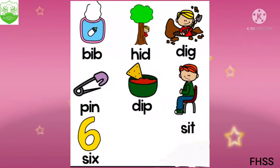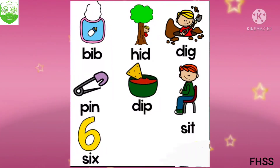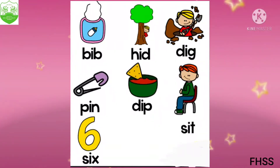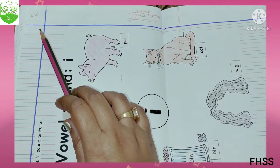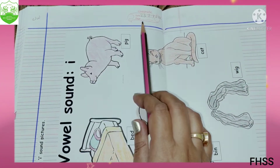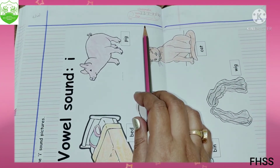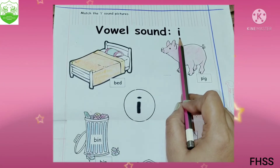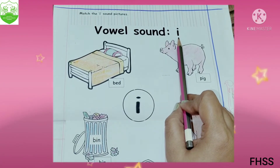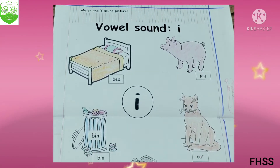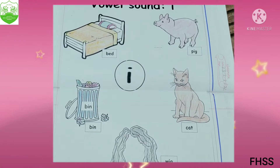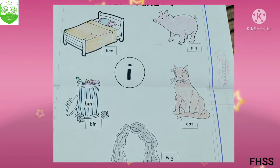Now children, all of you get ready with your English copy. We will do our practice work. All are ready with your English copy. So first you have to write C, W and today's date. Children, we have learned today about vowel sound I. So what do you have to do? We have to match the I sound word.